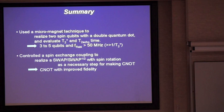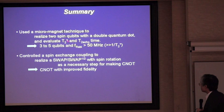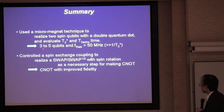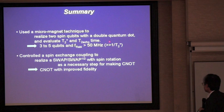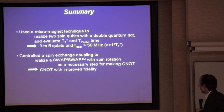In summary, we used the micro-magnet technique to realize two spin qubits with a double quantum dot and evaluated T2-star and T2 echo time. We are now working to extend the technique to three to five qubits and raise the Rabi frequency to exceed 15 megahertz, well faster than the inverse T2-star time. We have controlled the spin exchange coupling to realize SWAP and square-root-SWAP gates together with spin rotation as a necessary step for implementing the controlled-NOT gate. The controlled-NOT gate is not yet done, but we are working toward it with improved fidelity. Thank you.